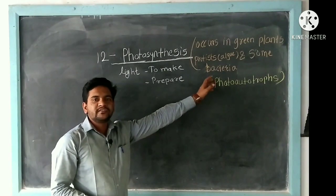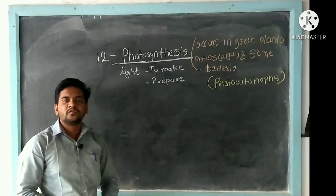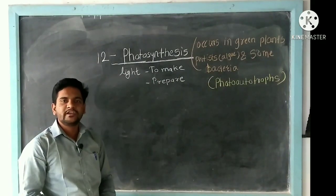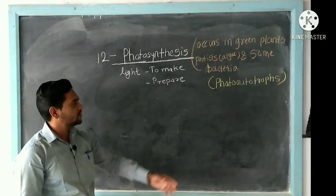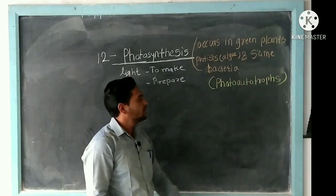Using sunlight, plants make their own food material. So they are known as photoautotrophs.